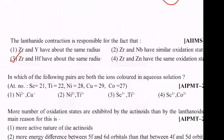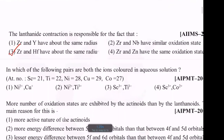In which of the following pairs are both ions colored in aqueous solution? There are two ions that are colored. Nickel 2+ and copper +, or Nickel 2+ and titanium 3+? Nickel 2+ has D8 electrons. Copper + is D10 — colorless. Scandium 3+ is also colorless. So the two colored ions are Nickel 2+ and Titanium 3+.